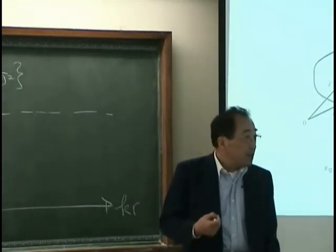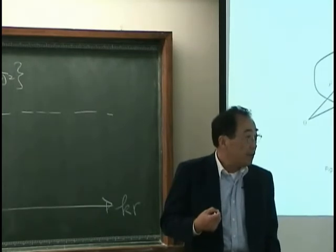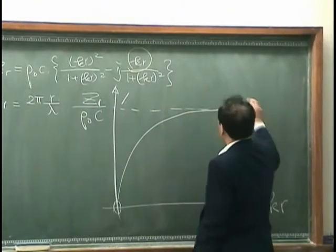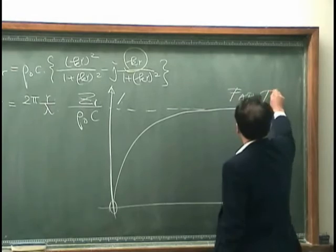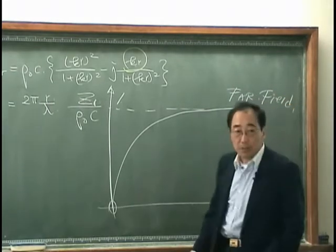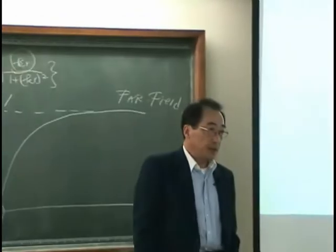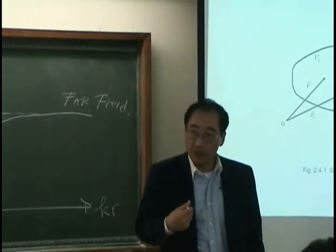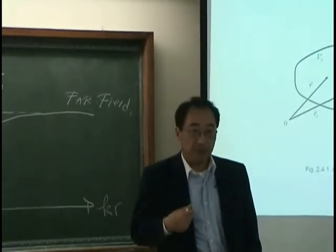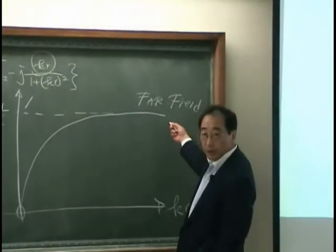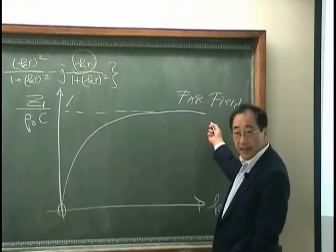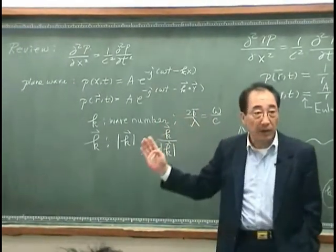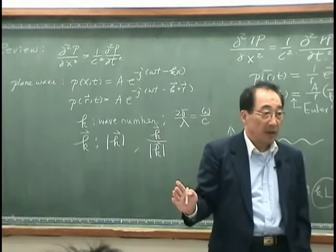I feel like I am in the field of far field. That looks like this, and this is a far field. What does it mean by far field? It's the field that I am in — the field of far field. Therefore, in this field, the wavefront will look like the wavefront of the far field.